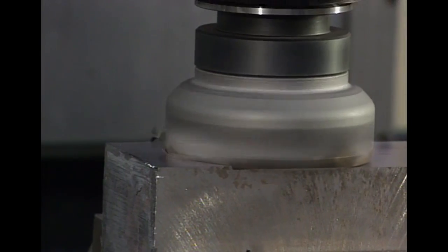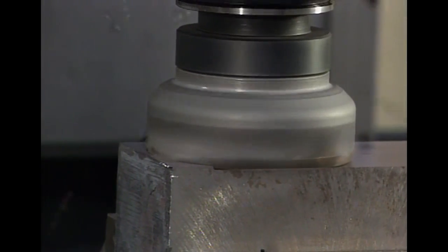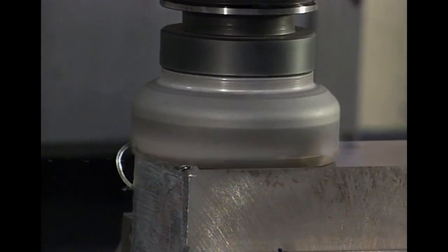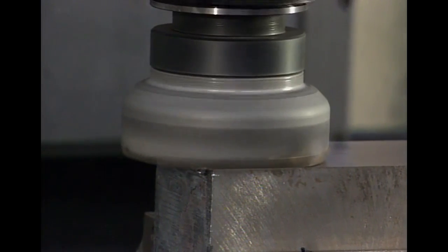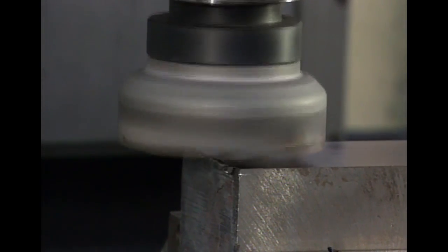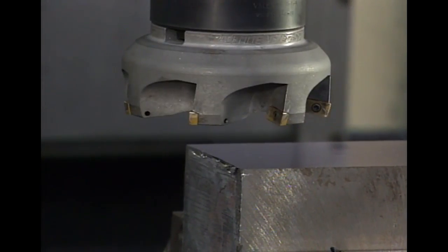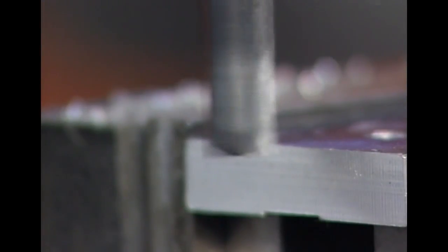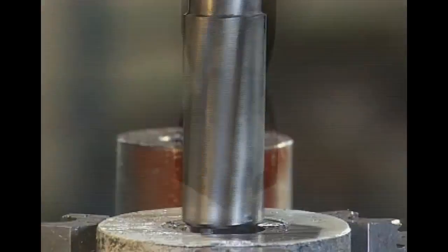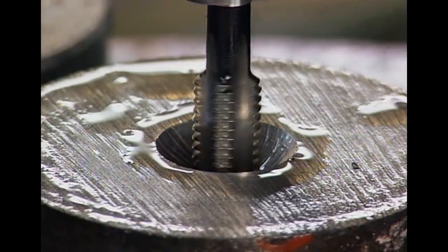A multipoint tool has two or more chip producing edges on a common body and is rotated to cut. Some examples of multipoint tools include face milling cutters, end mills, drills, reamers, and taps.